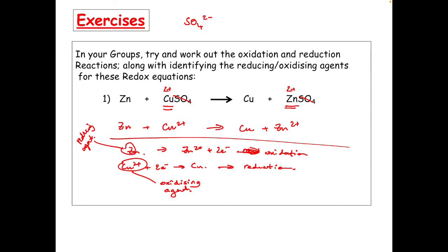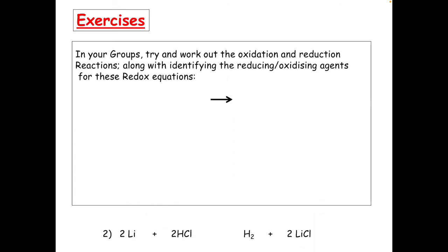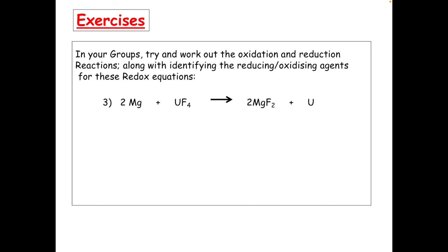There are a few more to try in this PowerPoint — I'll leave these up so you can give them a go, and there are also some questions in the assignment. For the first one, write it without the spectator ions, do the lithiums on each side, then the hydrogens, work out your half-equations, and identify the reducing and oxidising agents. Please get in touch if you need any help.